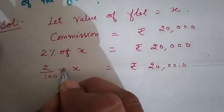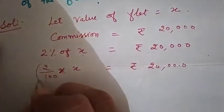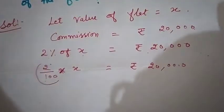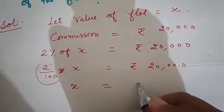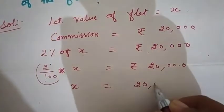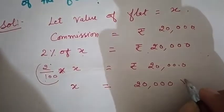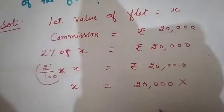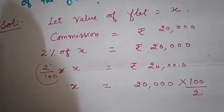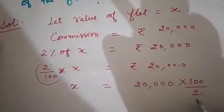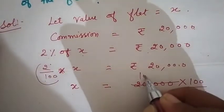अब हमें सिर्फ x की value बतानी है। यह number 2/100 जो है उसे दूसरी side में ले जाना है, तो only x रह जाएगा। 2/100 जब दूसरी side में जाएगा तो reciprocal हो जाएगा — 100/2 हो जाएगा। अब x की value आ जाएगी। 2 ones are 2 — cancel करने पर 10,000 बचेगा।